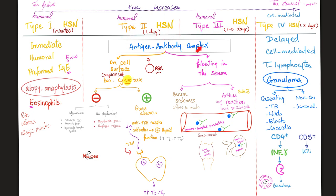Type 3 also involves antigen-antibody complexes, but in a different location — floating freely in the plasma. This is the cause of serum sickness, which is a diffuse and acute reaction, or the Arthus reaction, which is very localized on the skin and subacute. Serum sickness is generalized and acute; Arthus is localized and subacute and subcutaneous. Type 3 is also the story of immune-mediated vasculitis, immune-complex nephritis, and immune-complex arthritis — as seen in lupus and rheumatoid arthritis.